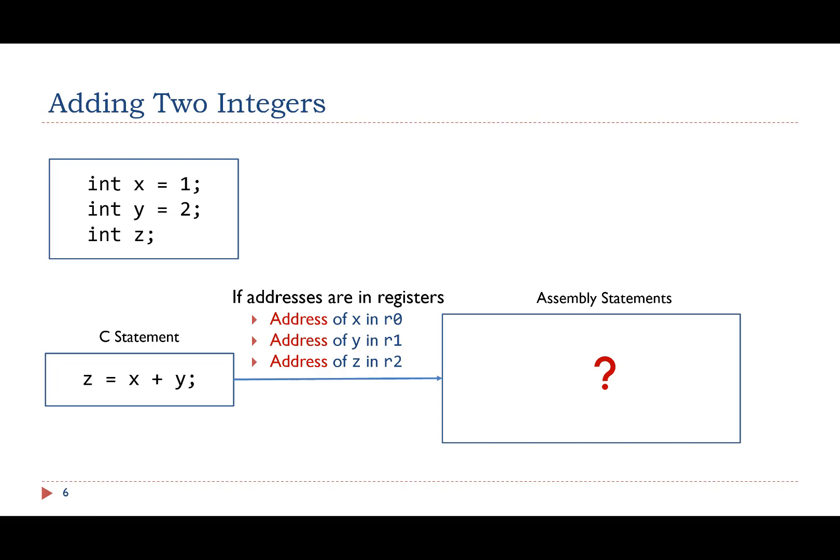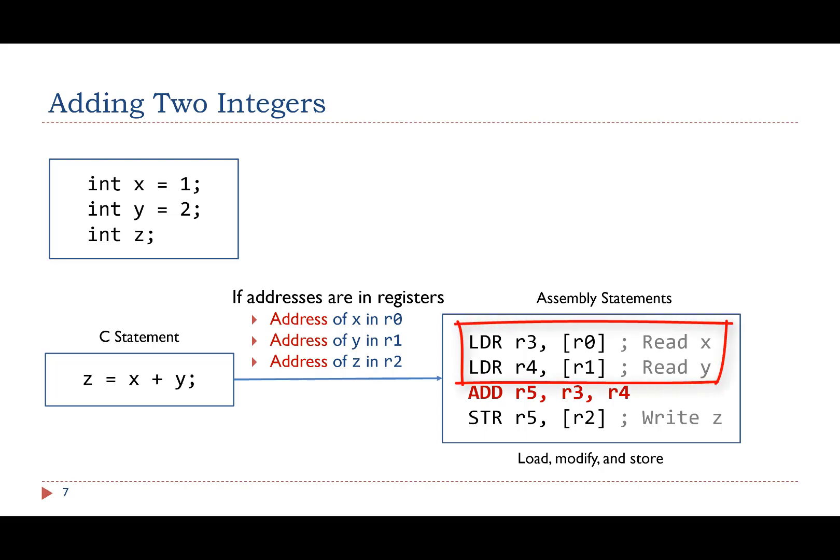What's the equivalent assembly implementation if variables x, y, and z are stored in memory instead of in registers? Here is the implementation. Software needs to load x and y from memory and save them into registers, then calculate the sum and finally save the sum to memory.